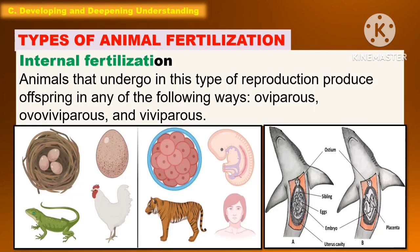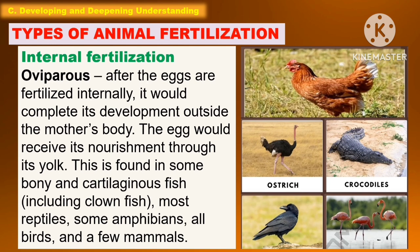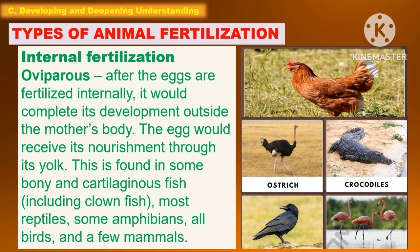Animals that undergo internal fertilization produce offspring in any of the following ways: oviparous, ovoviviparous, and viviparous. In oviparous animals, after the eggs are fertilized internally, they complete their development outside the mother's body. The egg receives its nourishment through its yolk. This is found in some bony or cartilaginous fish including clownfish, most reptiles, some amphibians, all birds, and a few mammals.